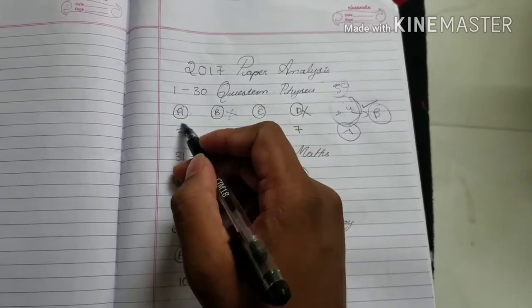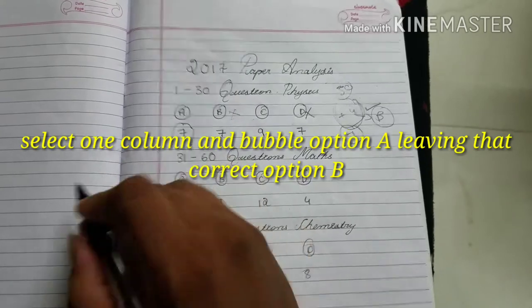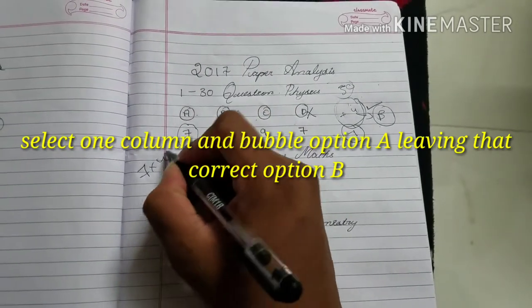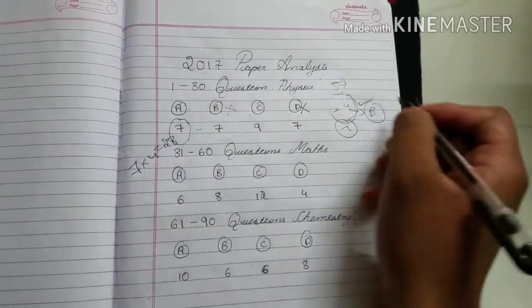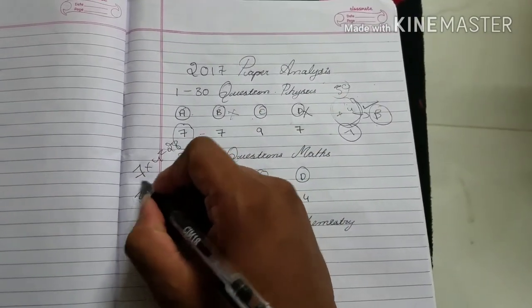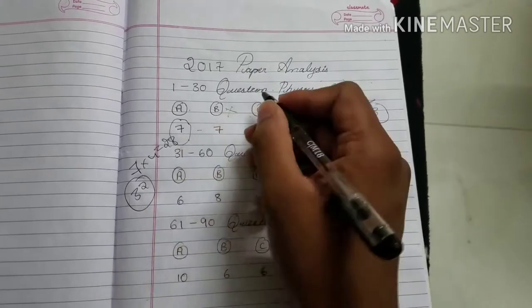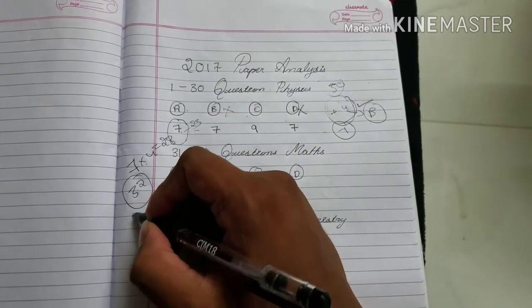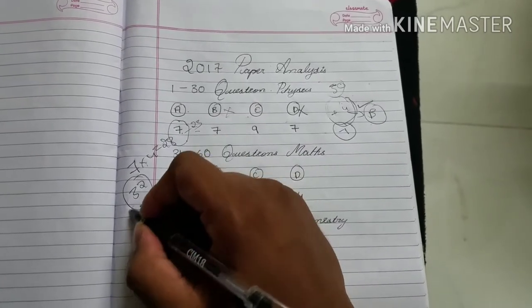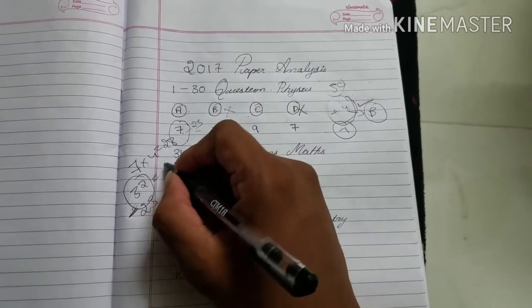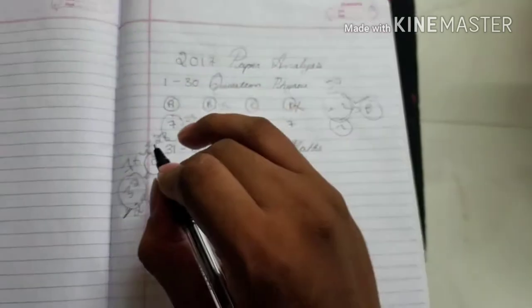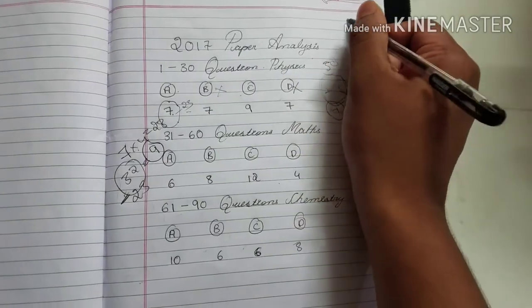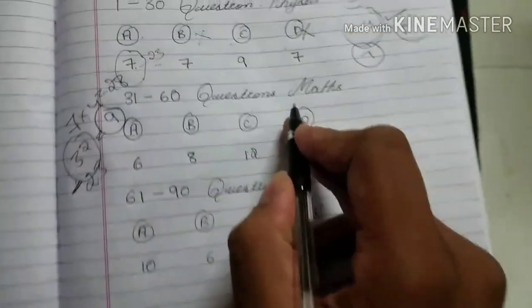Now there are 7 options as A, so there are 7 correct answers. 7 into 4 equals 28 marks, and this plus 4 equals 32 marks you got as correct. For negative marks, 7 correct, remaining 23 negative, so 32 minus 23 you will get 9. 9 marks you will get easily from physics. Keep it as 9 aside, now come to maths.